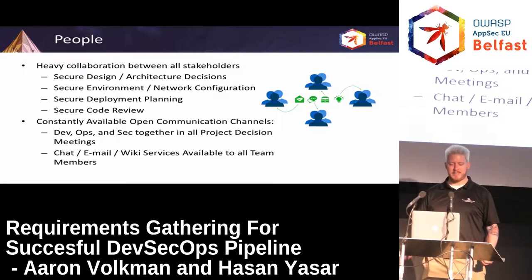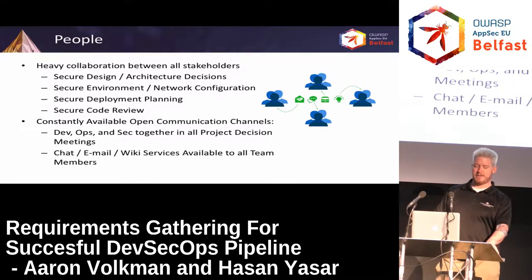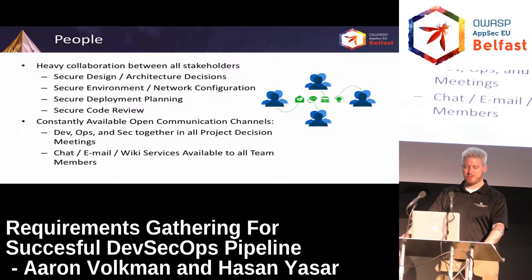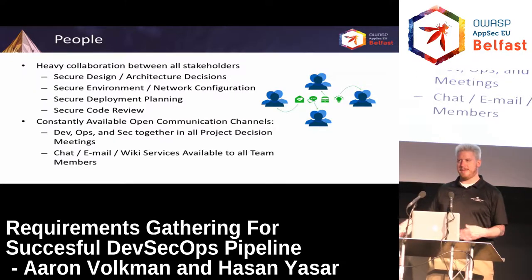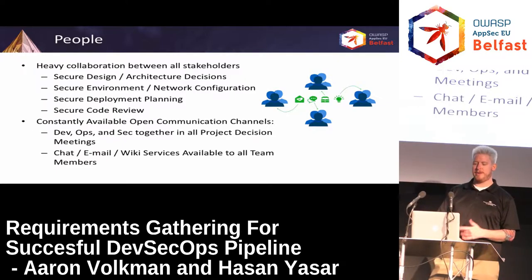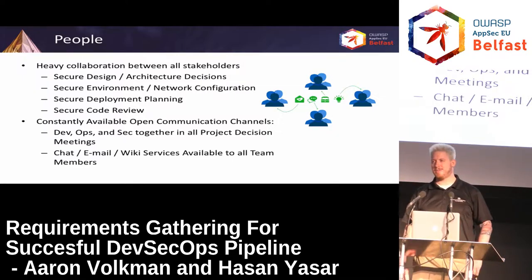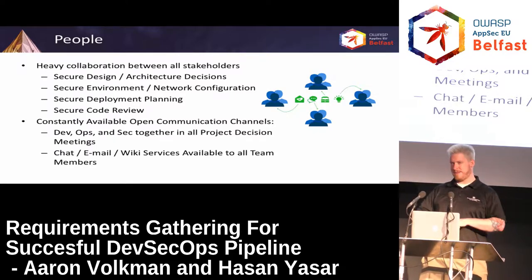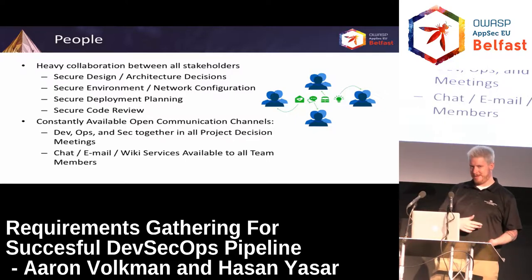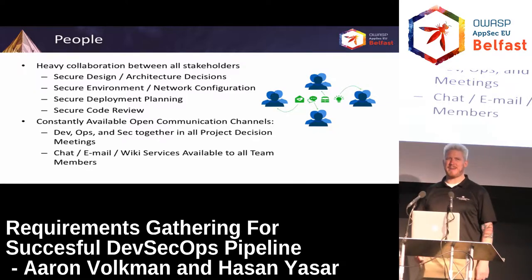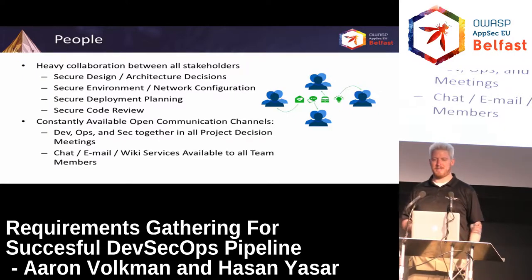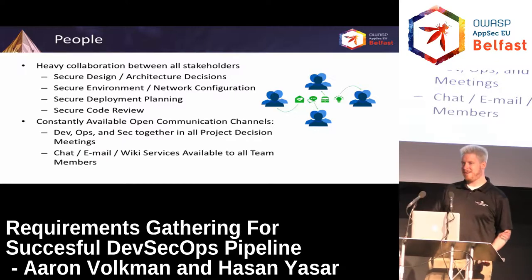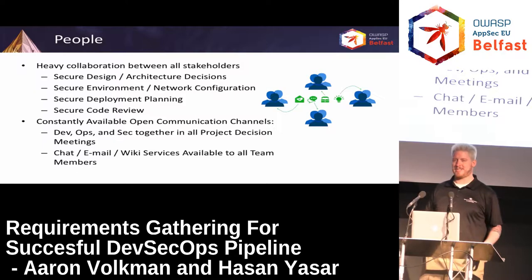On the people side, we make sure we have constantly available and open communication channels. We want to make sure that someone representing DevOps and security are together in all project decision meetings — a way of shifting left security and baking it in from the beginning instead of trying to schlep it on at the end. We want e-communications as easy as possible with chat, email, and wiki services available to all team members. On teams where everybody telecommutes and is spread out, this works out very well because they're forced to use wikis and chat. I know a shop back home where almost everybody works from home and they have a rule: if it's not in the wiki, it didn't happen. If two people meet in a coffee shop and have a conversation, that conversation must be documented in the wiki so the whole team can see it.